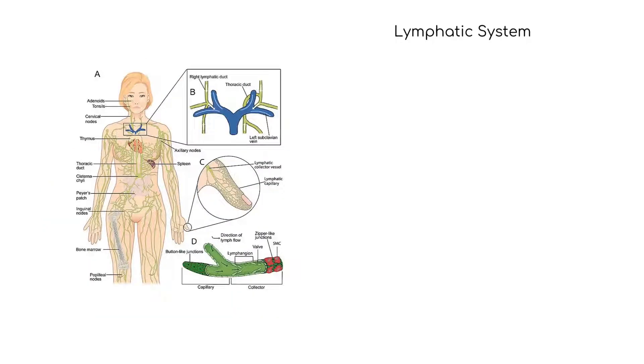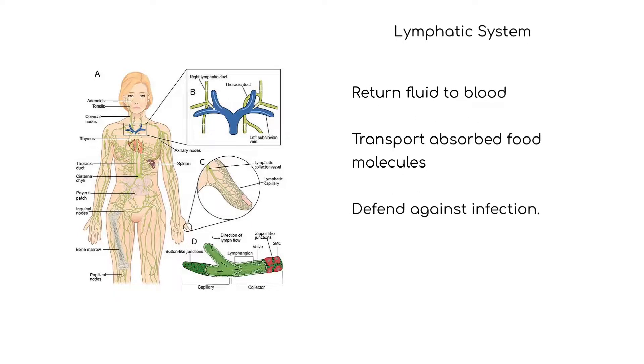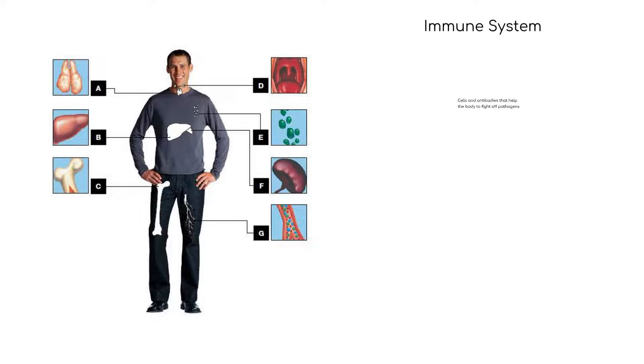The lymphatic system includes the lymph vessels, lymph nodes, thymus, and spleen. The function of the lymphatic system is to return fluid to blood, as well as transport some absorbed food molecules and defend against infection. The immune system consists of cells and antibodies that help the body fight off pathogens. Some organs associated with the immune system are the thymus and spleen.